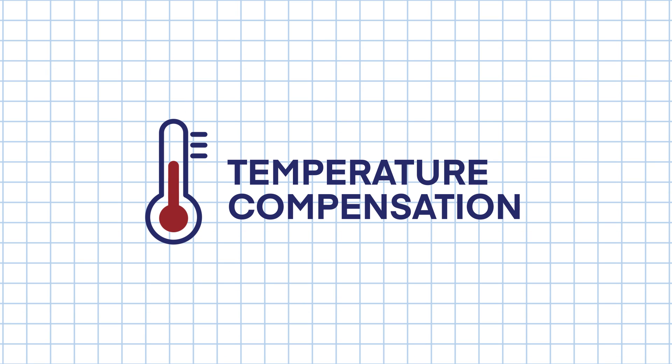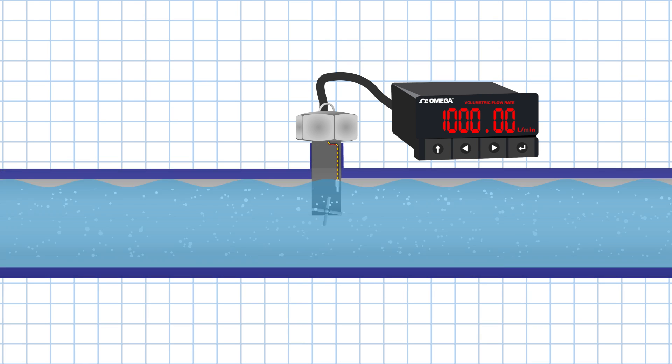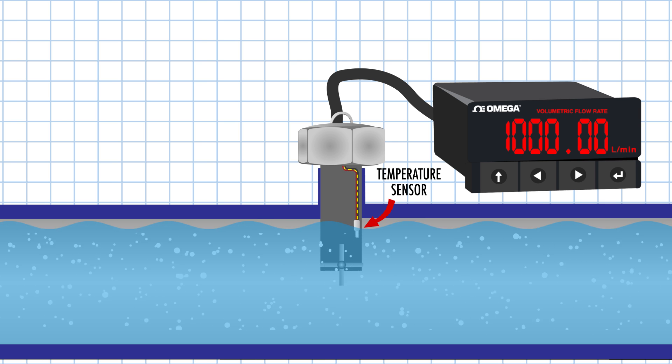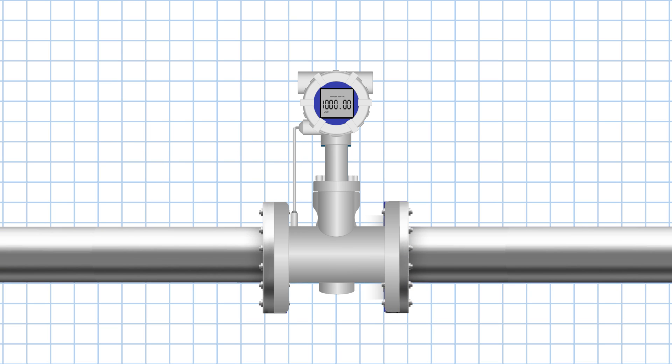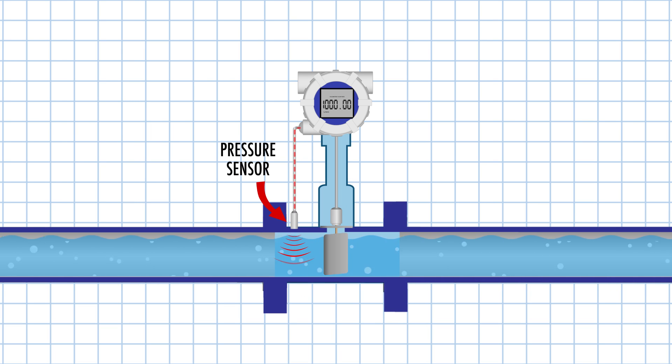Temperature compensation can often be achieved with a temperature sensor built into the flow meter, so it can use the temperature information to calculate the corrected volumetric flow rate, based on the known relationship between temperature, density, and volume. Pressure changes can affect the density of a substance as well. That's why volumetric flow meters can be equipped with pressure sensors, so that the flow meter can apply correction factors or algorithms that take into account the pressure's impact on the substance's density, and calculate the corrected volume flow rate accordingly.